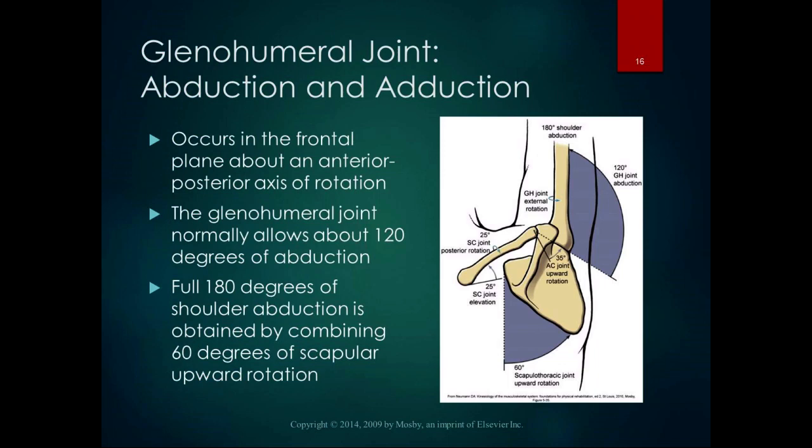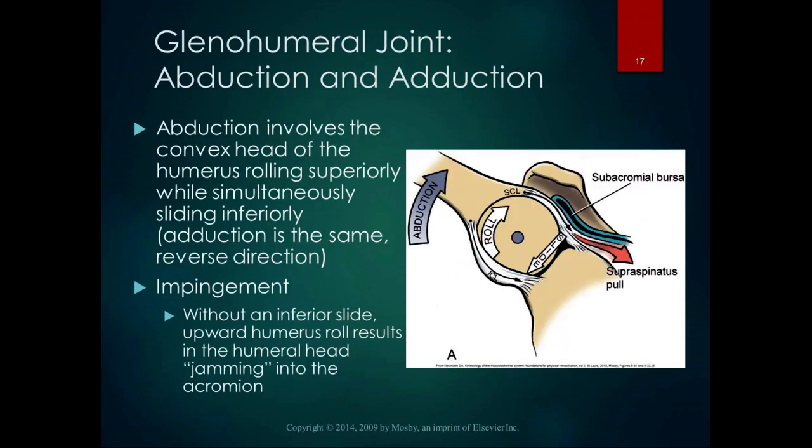We'll talk about scapulohumeral rhythm — how those motions interact — later. The roll-and-glide mechanics of the glenohumeral joint during abduction involve the convex head of the humerus rolling superiorly while simultaneously sliding inferiorly to maintain joint congruency. If roll and slide happened in the same direction, the head of the humerus would jam into the acromion process — that's what happens in impingement when you don't have that inferior slide. A lot of times when we're doing shoulder mobilizations, we work on that inferior slide of the humeral head in the socket as someone elevates their arm.